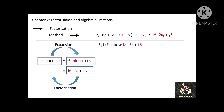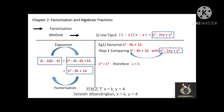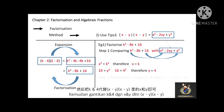Next, factorize k squared minus 8k plus 16. Is this expression similar to Tips 1, Tips 2, or Tips 3? The answer is Tips 3. Similar to the previous example, we do the comparison and find x equals k and y equals 4. Substituting into (x minus y)(x minus y) gives (k minus 4)(k minus 4).